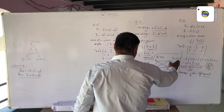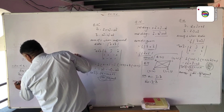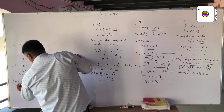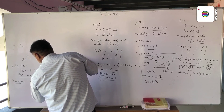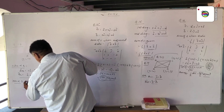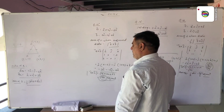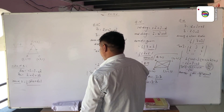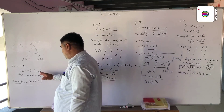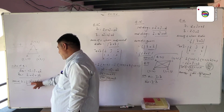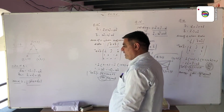Using the area formula for a triangle when adjacent sides are given: area equals 1/2 times the magnitude of AB cross BC. We compute the cross product AB cross BC, then find its magnitude, and multiply by 1/2 to get the area of the triangle in square units.